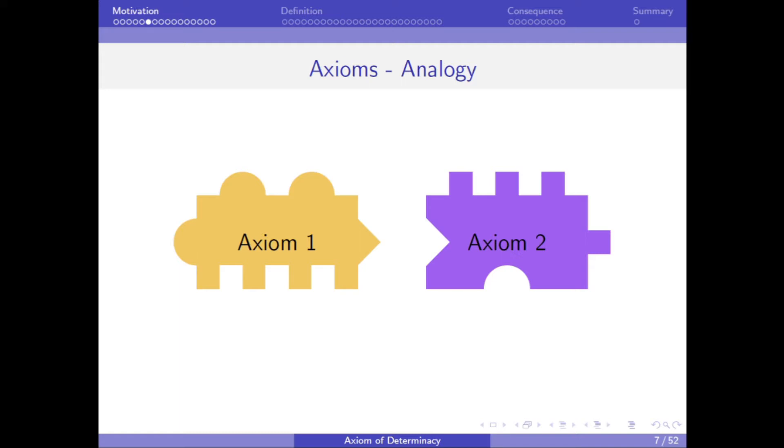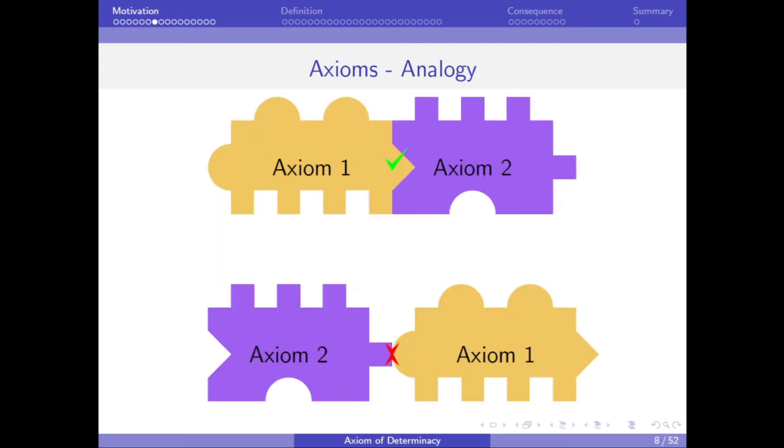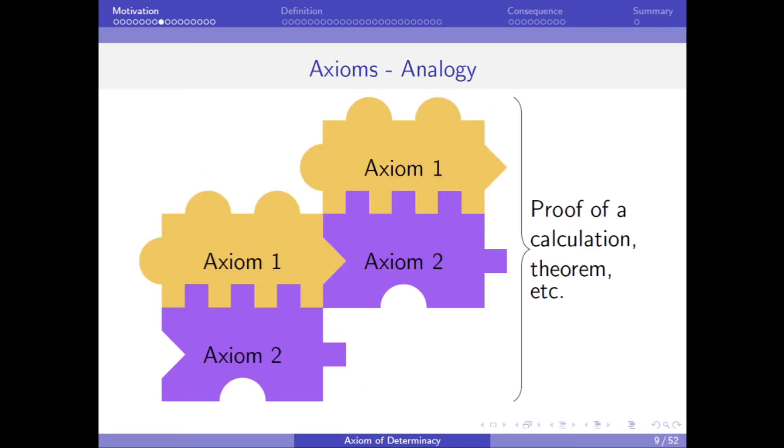Axioms can be likened to types of puzzle pieces. Just like there are only certain ways to combine puzzle pieces, we can only combine axioms if it's logically valid to do so. And the resulting logical combination of axioms constitutes the proof of a mathematical result, whether that result is a calculation, theorem or something similar. And just as we might be interested in what shapes we can make just using copies of these two puzzle pieces, we might want to study what we can and cannot prove using just these two axioms.